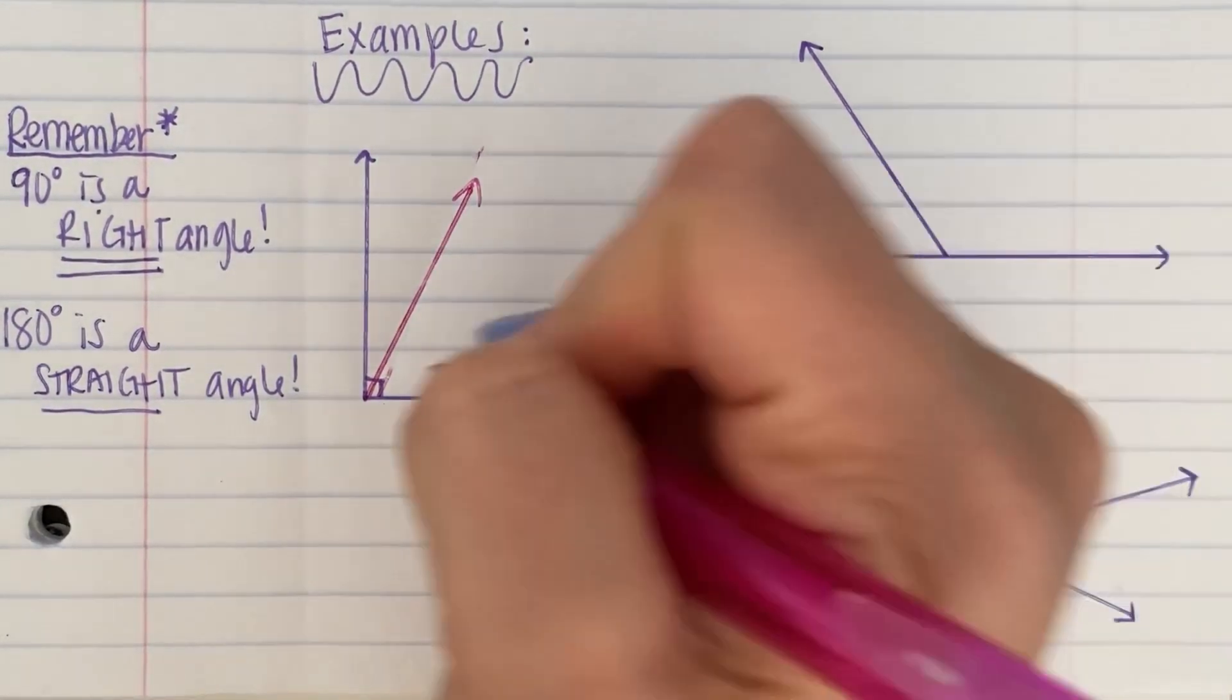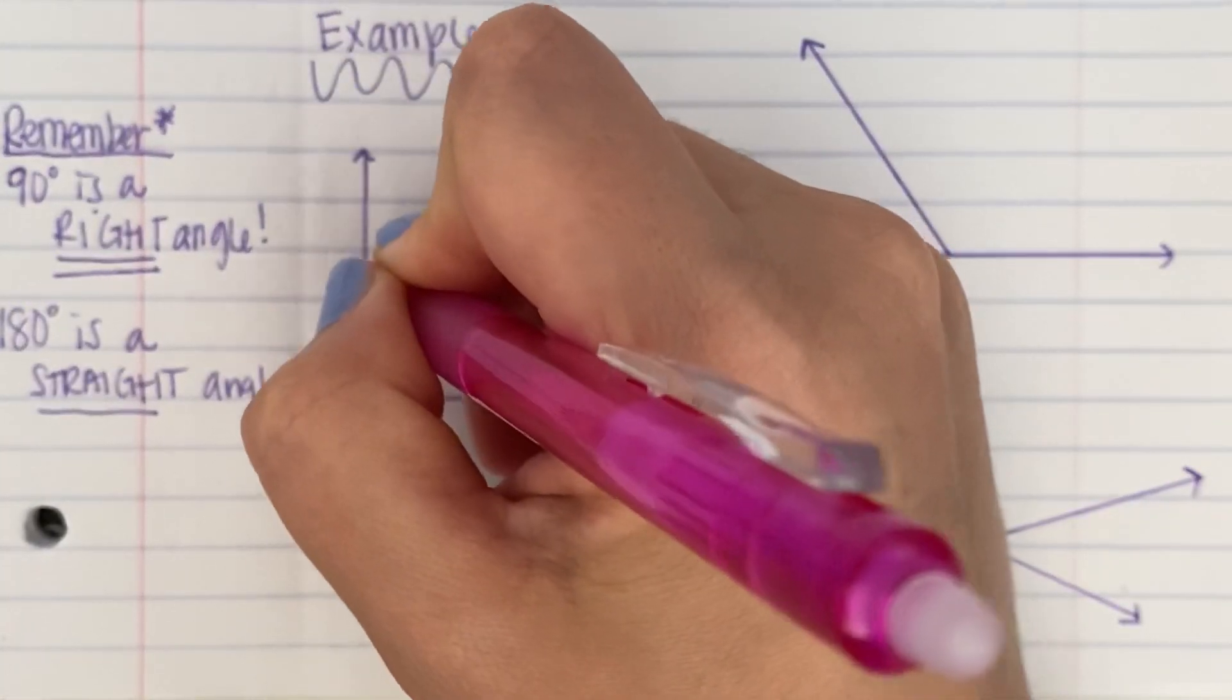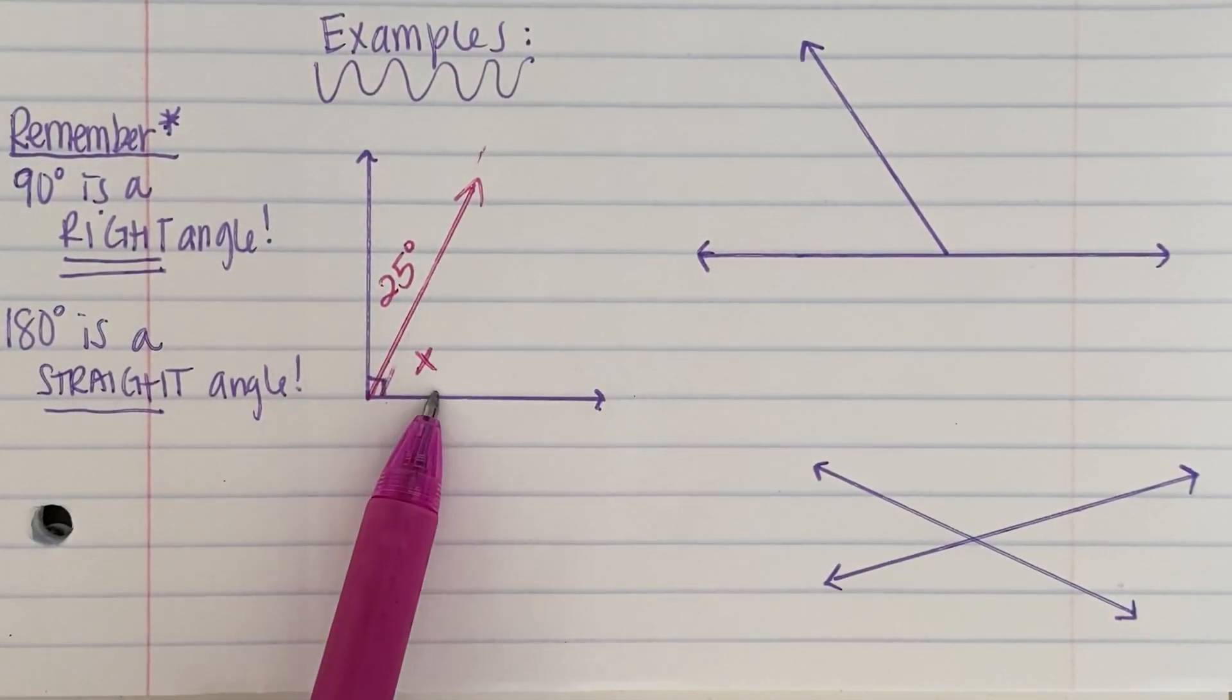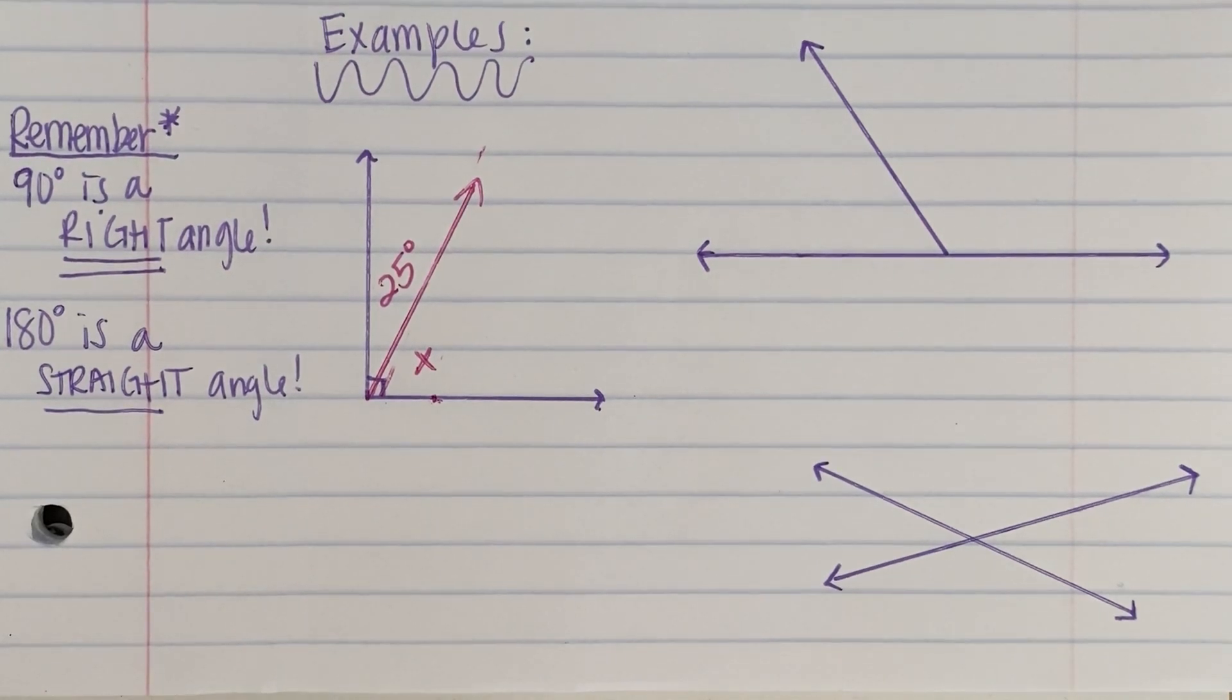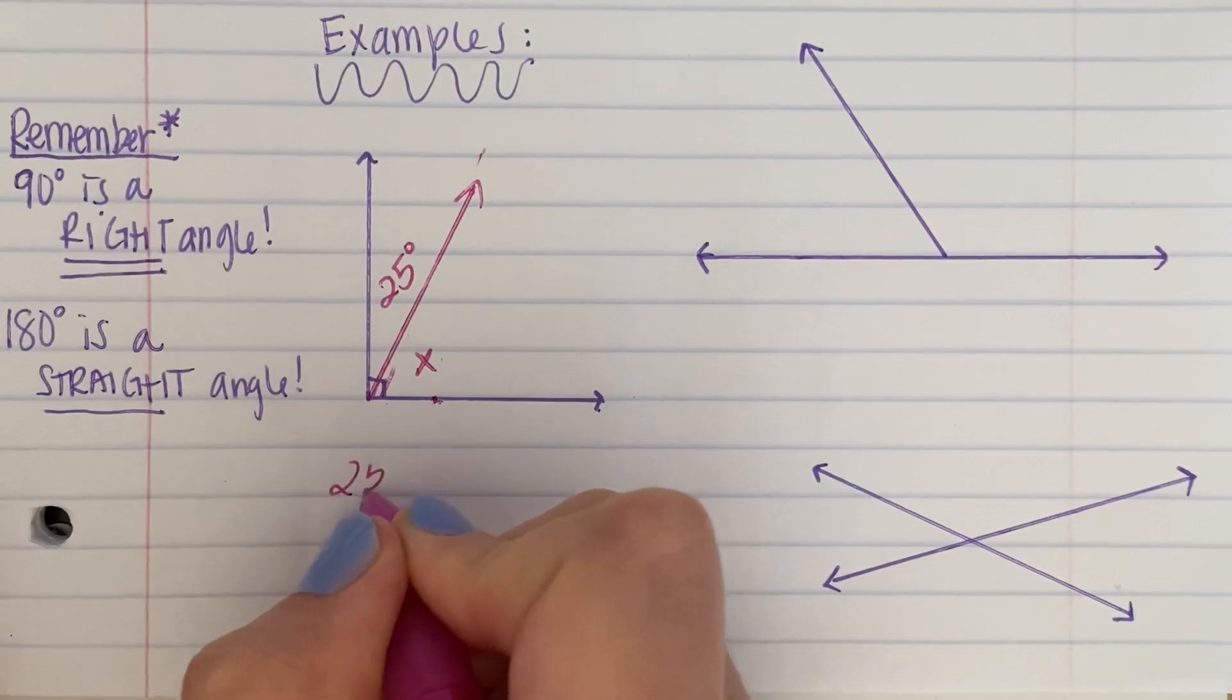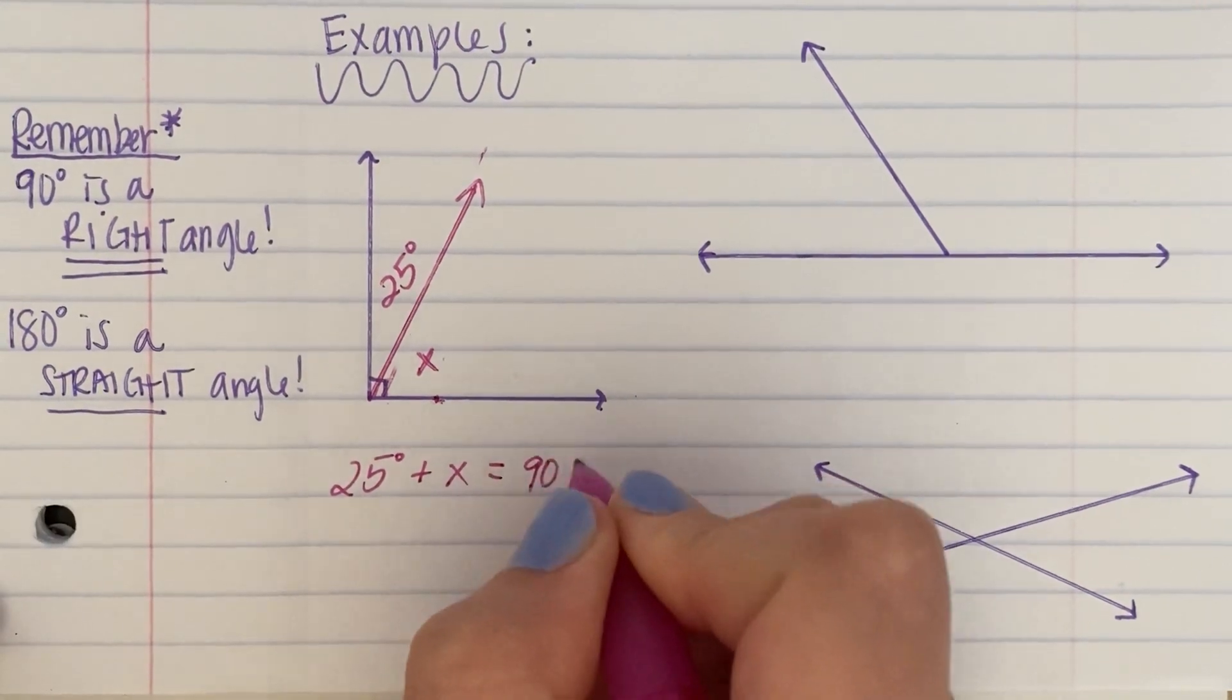Here is an example. And let's say we want to find X, which is right here. But we know that this angle over here is 25 degrees. We know that this angle is 25 degrees, but we don't know that angle. We do, however, know that these two angles added up together equal 90 degrees because these are complementary angles. So what do we do? Well, we can set up an equation. We know that this angle, 25 degrees, plus this angle, X,